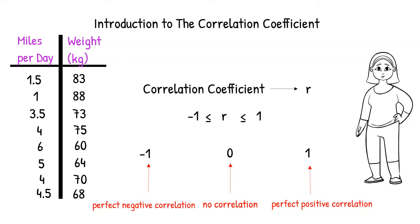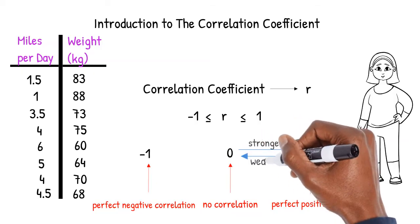However, it is rare that there is absolutely no correlation or a perfect correlation. The closer the correlation coefficient is to 1 on the positive side, the stronger the correlation. And the closer to 0, the weaker the correlation.